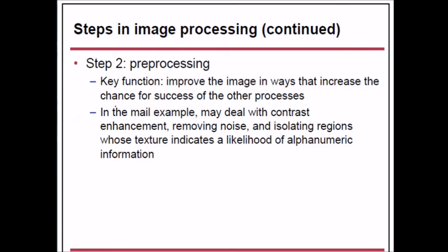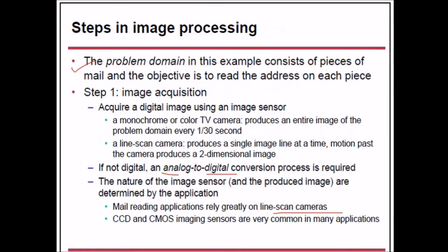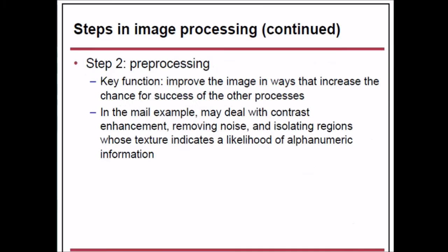Step 2 is pre-processing. The key functions are to improve the image in ways that increase the chance of success for subsequent processes. For the mail reading example, this may involve contrast enhancement, removing noise, and isolating regions with textures that indicate the likelihood of alphanumeric information.